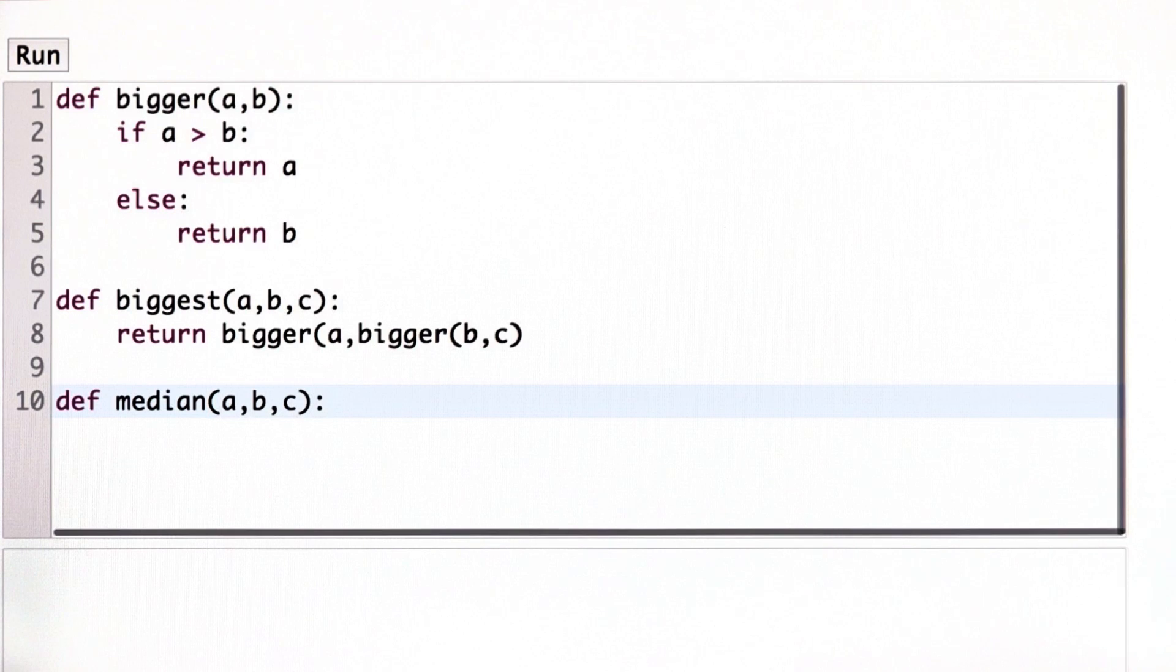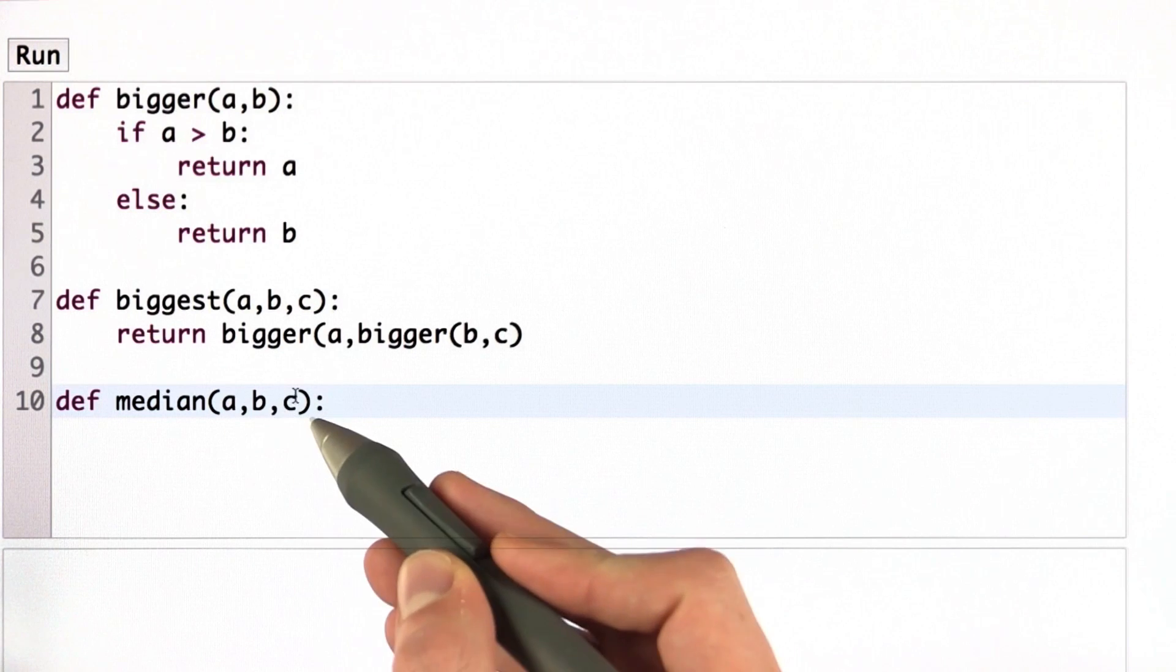As specified in the problem, it's called median, and we take in three parameters. As I did before, we're going to call them A, B, and C.